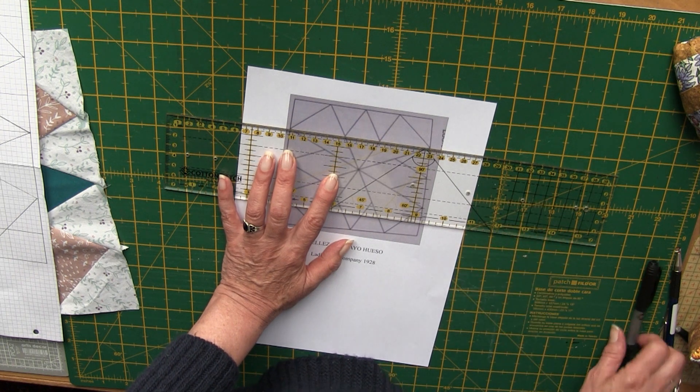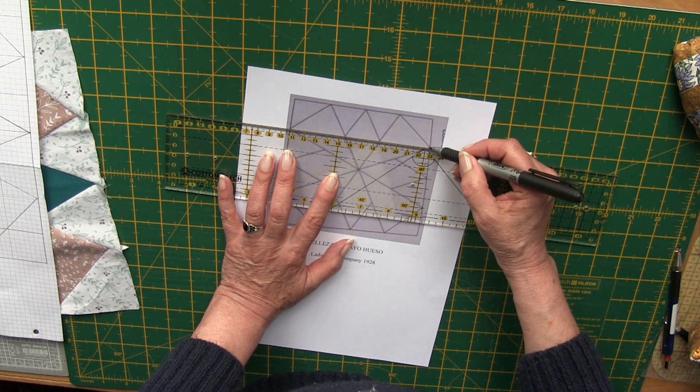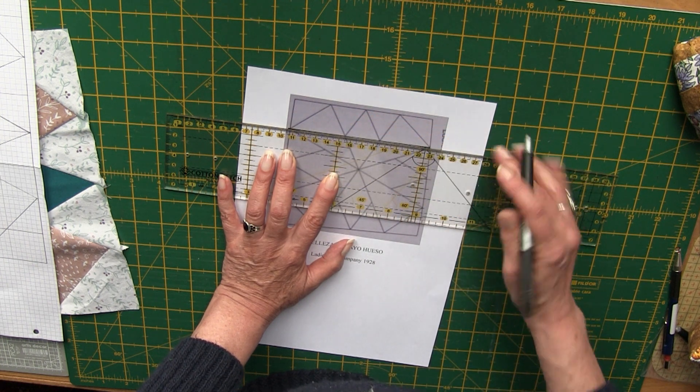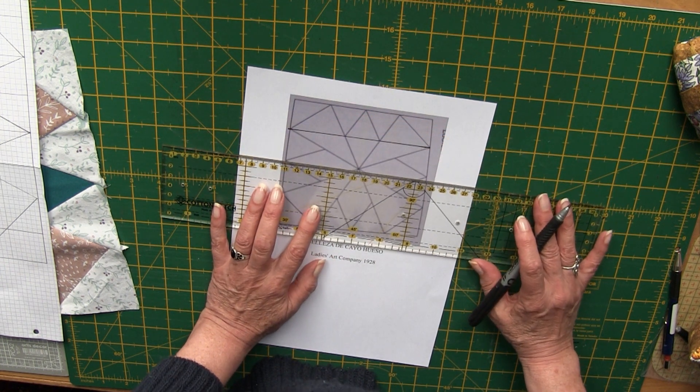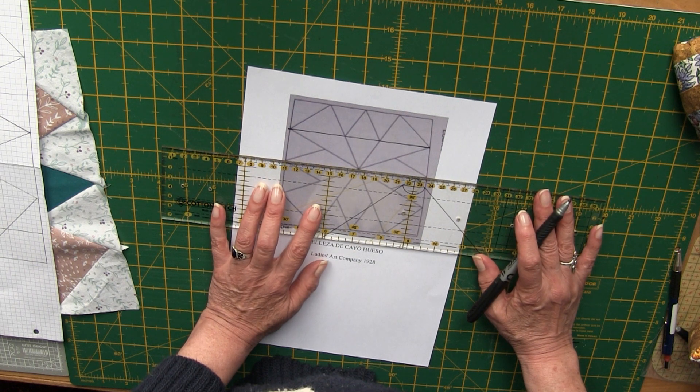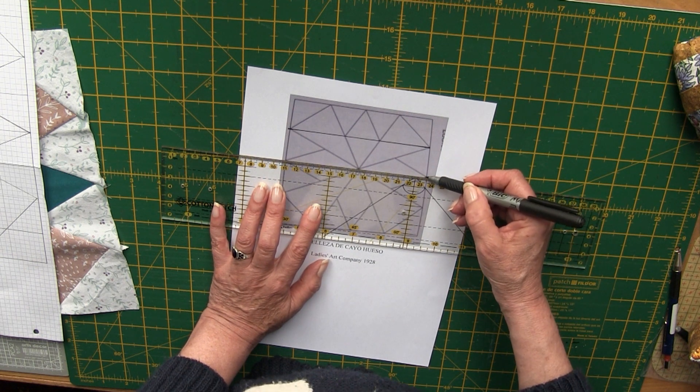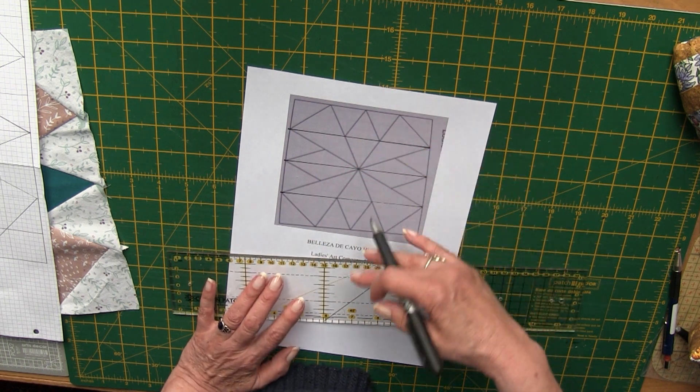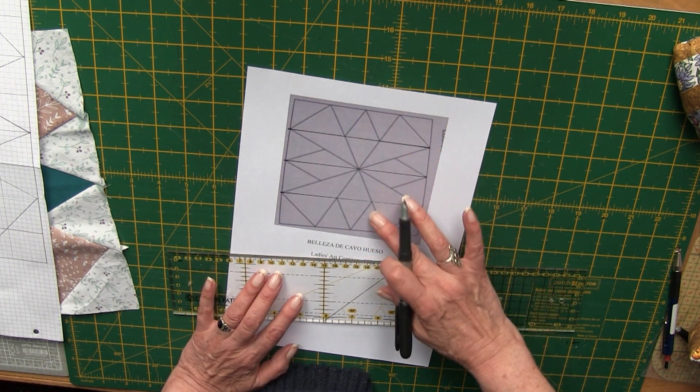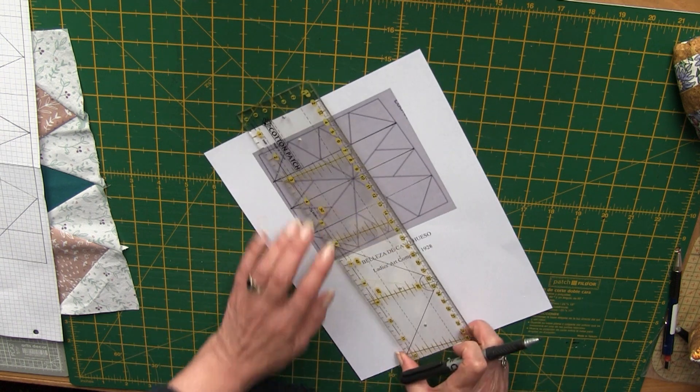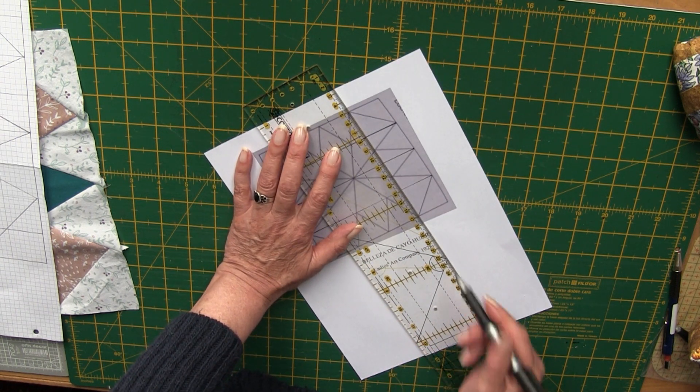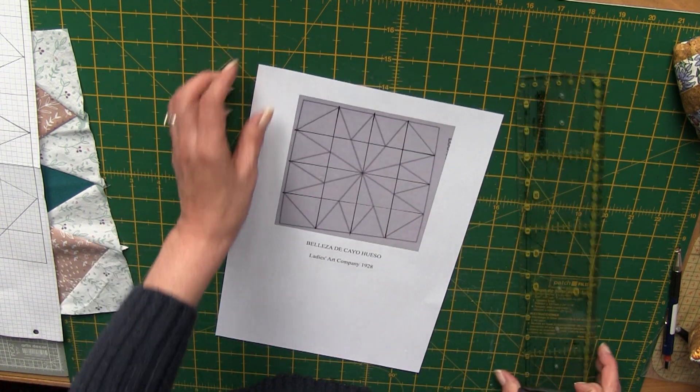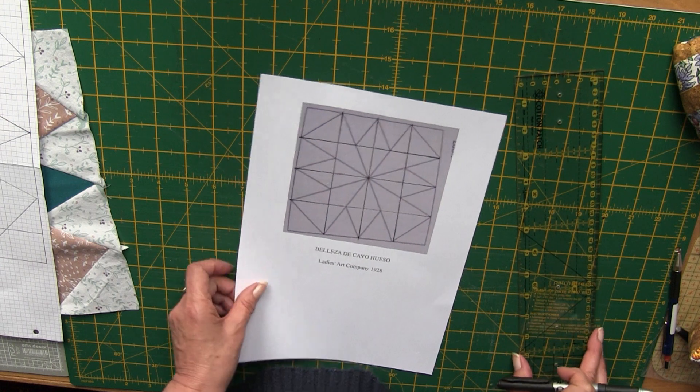Hacemos la primera división. Tenemos que cuadricular el papel para hacer el bloque. Ya he hecho 4 líneas, lo he dividido en 4 partes: 1, 2, 3, 4. Y hago lo mismo con la parte vertical. Ya lo tenemos dividido. Entonces vemos cómo va el dibujo.